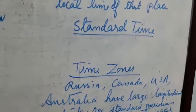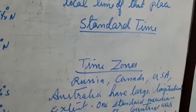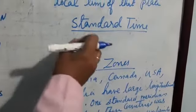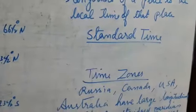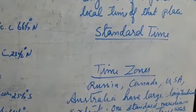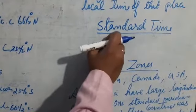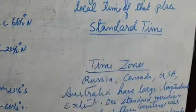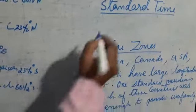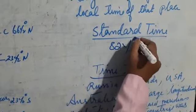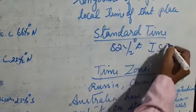The next topic is standard time. If all the places on earth use their own local time, it would be confusing. For the smooth functioning of railways, airways, and other means of transport and communication, countries take a central meridian and fix the time — this is called standard time. India has taken 82 and a half degrees east longitude and the time fixed is called IST — Indian Standard Time.